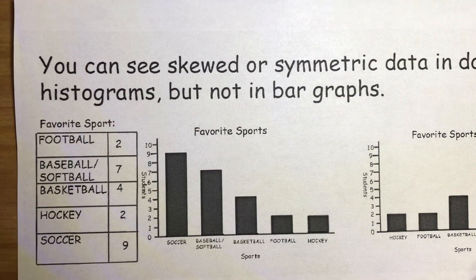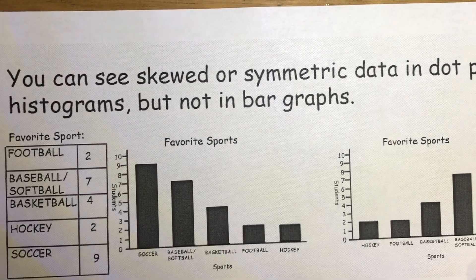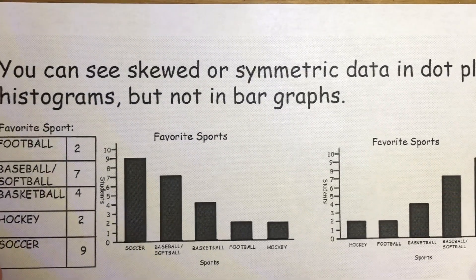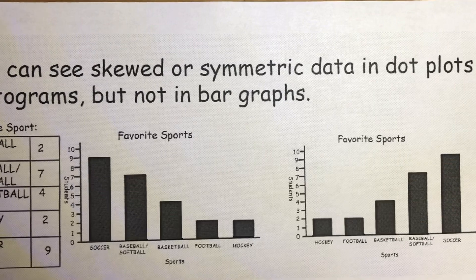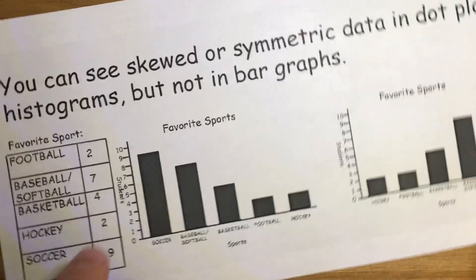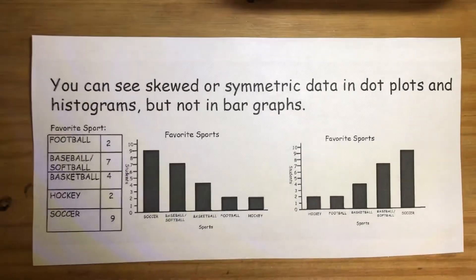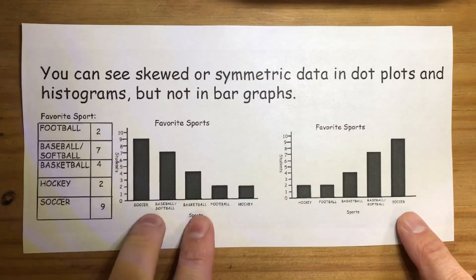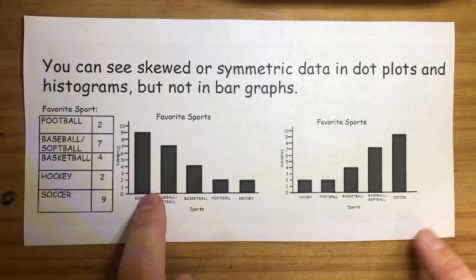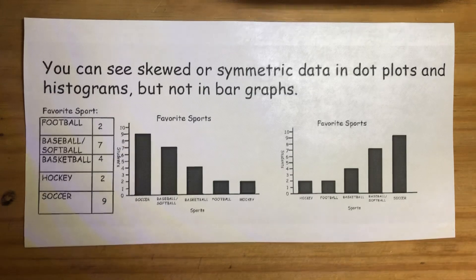So I think it's important for you to realize, but you can see skewed data or symmetric data in a dot plot or a histogram, but you can't do it in a bar graph. And the reason is bar graph shows data in categories, so it's not ordered. So you'll notice that I used the same data to make this graph as I did to make this graph. Okay? The same exact data to make both graphs. So this graph appears to be skewed right, and this graph appears to be skewed left, but it's the exact same data.